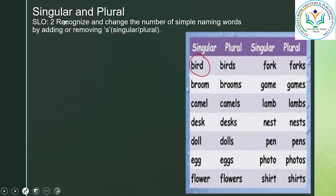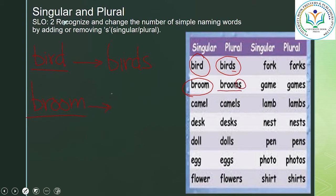Let's read the first word: bird. We add an S — birds. One bird; more than one are birds. Broom — it is used for cleaning, jis ko hum jhaadu bhi kehate hai — brooms. Camel — camel, yani oont — more than one: camels. Let's read the rest of the poster: desk, desks; doll, dolls; egg, eggs; flower, flowers; frog, frogs; game, games; lamb, lambs; nest, nests; pen, pens; photo, photos; shirt, shirts.